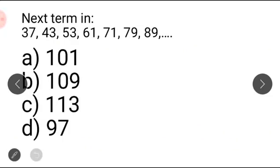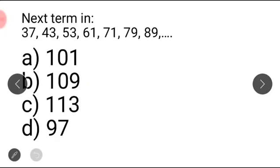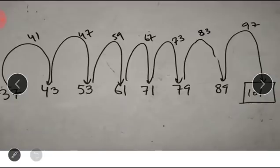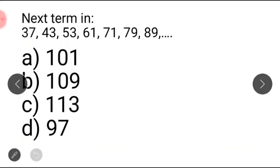The next term in the series is a simple prime number series. First I wrote 37, and then the next prime numbers: 41, 43, 47, 53, 59, 61, 67, 73, 79, 83, 89, 97, and the next term is 101. That is our answer.